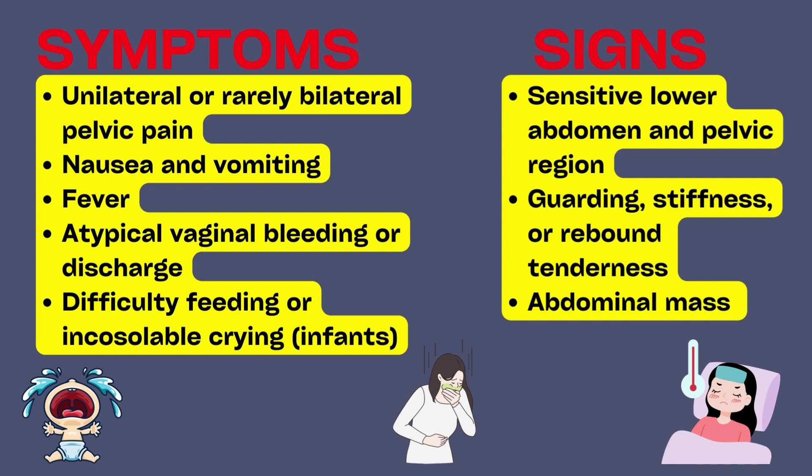Additionally, the patient may experience related nausea and vomiting. If the ovary has already become necrotic, fever might be present. In the event that the torsion involves a tubo-ovarian abscess, the patient may also experience atypical vaginal bleeding or discharge. Torsion in infants might cause feeding difficulties or very loud crying.